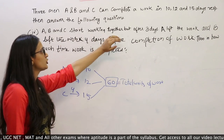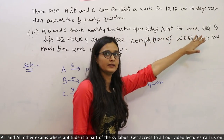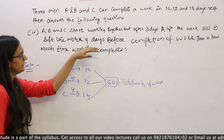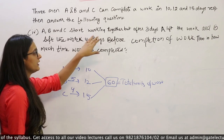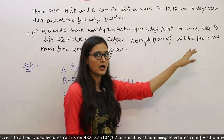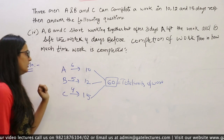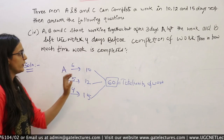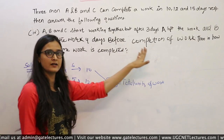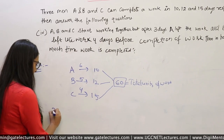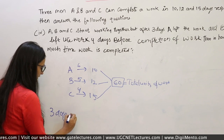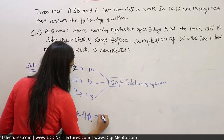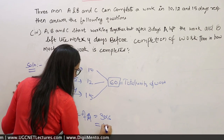A, B, C started working together, but after 3 days A left the work, and B left the work 4 days before the work was completed. We need to find in how many days the work was completed. We have found the efficiency of A, B, C. Now, like the last question, we will find the 3-day work of A, that is equal to 3 × 6 = 18 units.